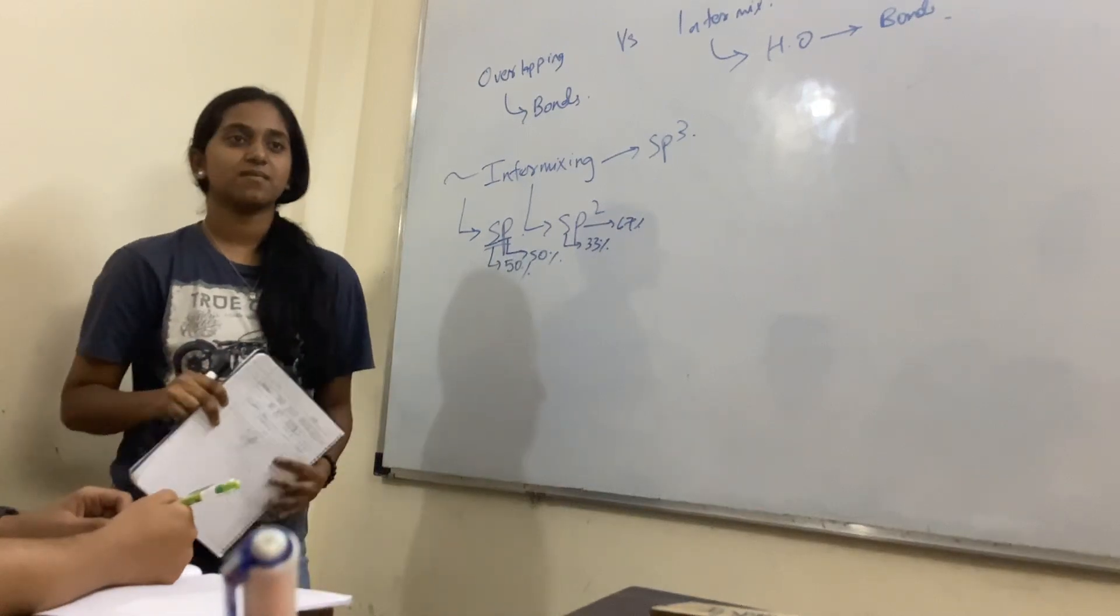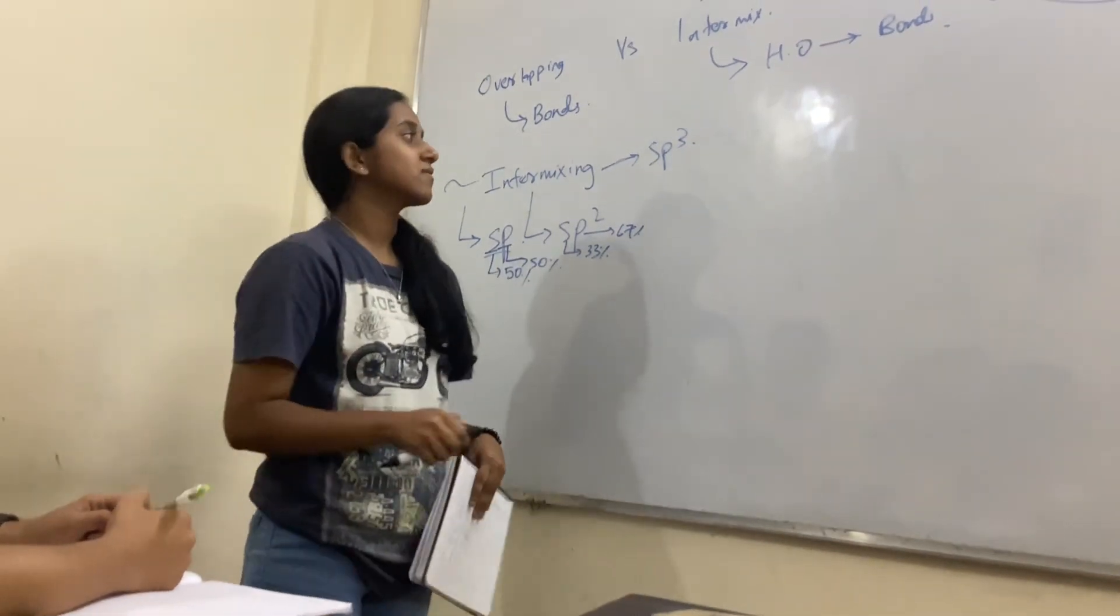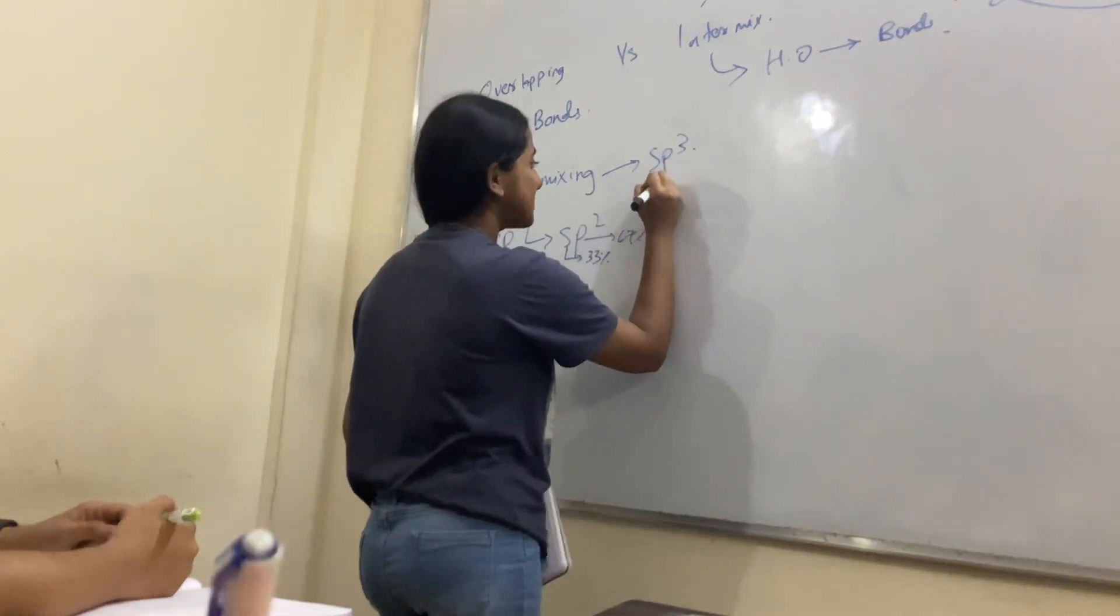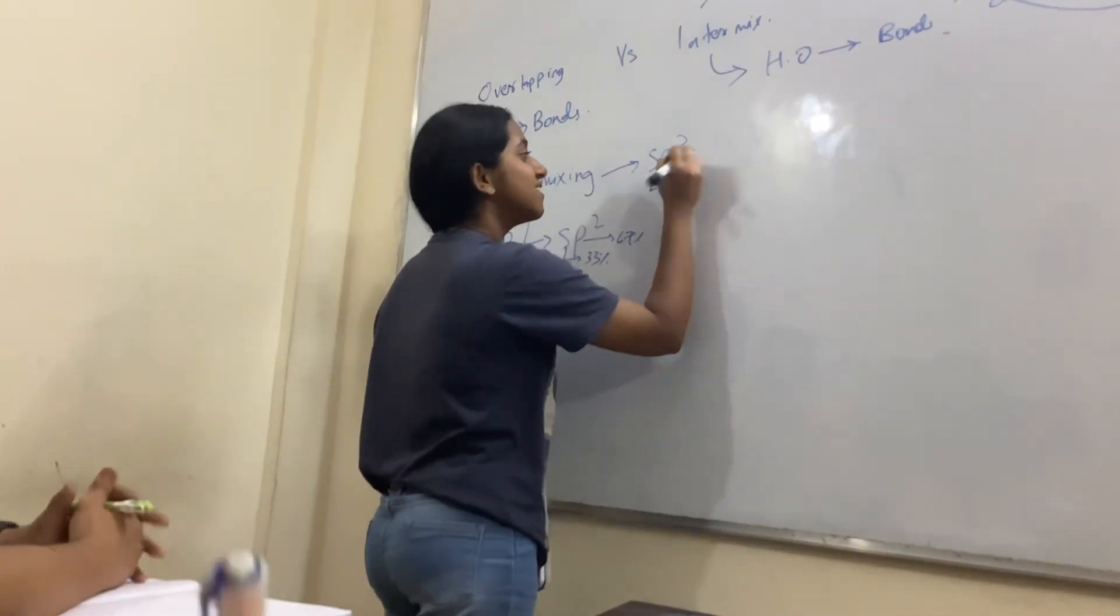Now in SP3 hybridization, how much percentage will it be? The S character is 25% and P is 75%.